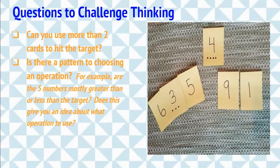You can also ask if they ever find a pattern to choosing an operation. For example, are the five cards mostly greater than the target number or less than the target number? And would that give them an idea of what operation to think about?